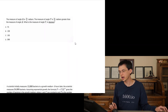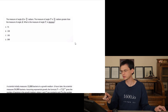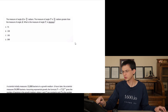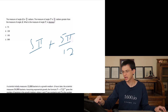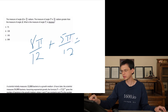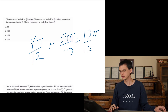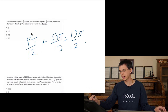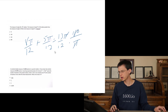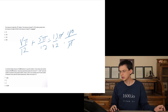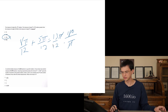The measure of angle R is two-thirds pi. Angle T is five pi over 12 radians greater. So we have 2π/3 plus 5π/12. Rewriting 2π/3 as 8π/12, we get 13π/12. Converting to degrees: multiply by 180 over π. 180 divided by 12 is 15, and 15 times 13 is 195 degrees. Answer C.